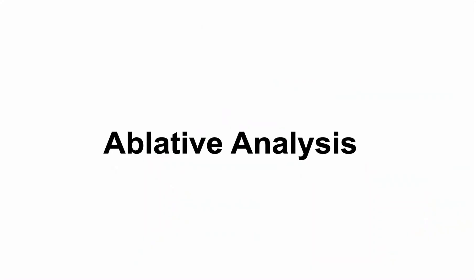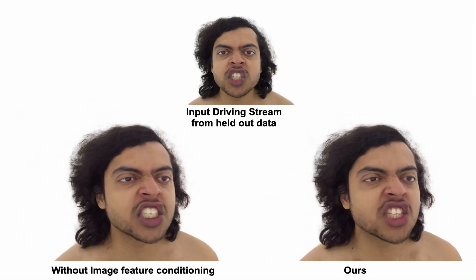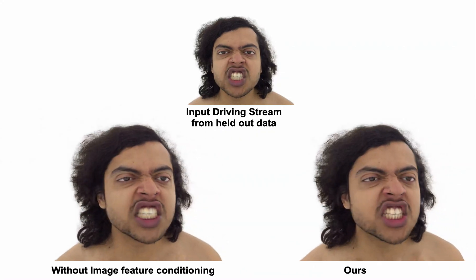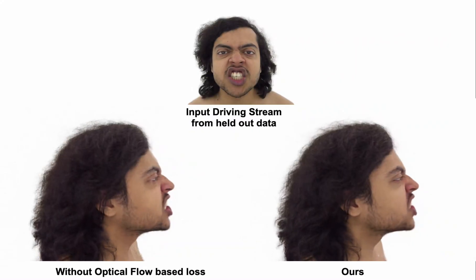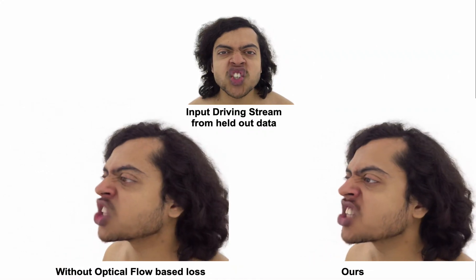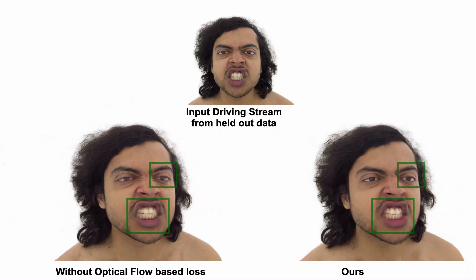We show the critical design choices of our approach. We show the result of conditioning the canonical radiance field network on features obtained from the image encoder, which leads to blurry results in the mouth region. We highlight the impact of using an optical flow-based loss, which helps produce temporally stable and artifact-free rendering in regions such as the eye and the mouth.